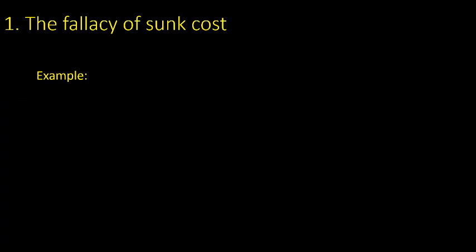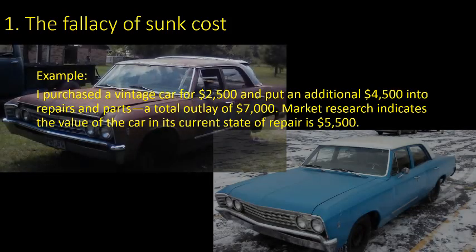Here's an example near and dear to me — one of my hobbies is fixing up old cars. This is a 67 Chevelle I've been working on for a couple of years; it belongs to my wife. I purchased a vintage car for $2,500, then put $4,500 into repairs and parts — rebuilding brakes, new tires, replacing panels, engine maintenance, re-upholstering. So I've spent a total of $7,000 fixing it up. After doing market research on Kelly Blue Book, the value of the car in its current state of repair is $5,500.